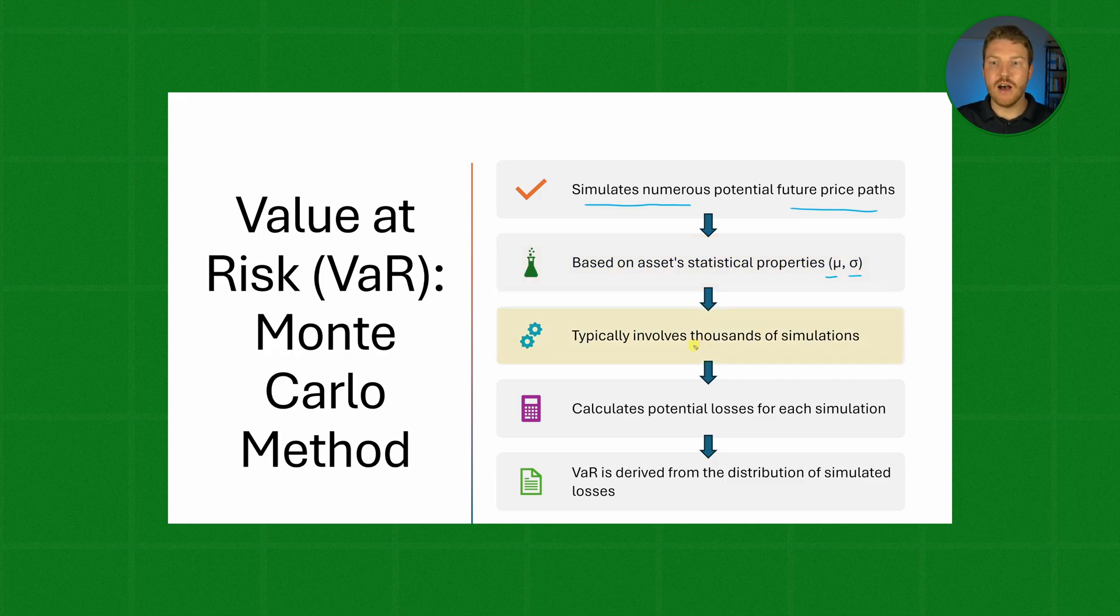And then we might run thousands of different simulations and calculate potential gains or losses for each of the simulations. And then we're going to look at all of those values and find the VaR at the percentile that we're interested in.